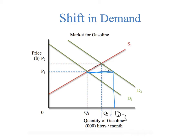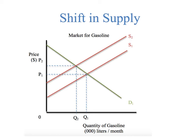Now let's take a look at what would happen if the supply curve shifts inward. Here's the market for gasoline still. Let's say there was a hurricane that cut the ability of suppliers to produce gasoline and get it to the market. As a result of the hurricane, the supply curve is going to shift inward, which is going to result in an increase in price from P1 up to P2 in the marketplace due to the drop in supply.